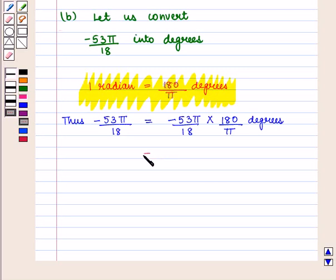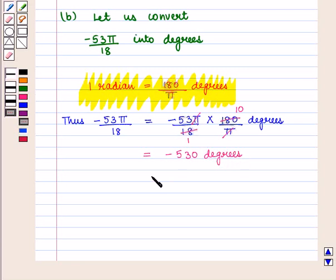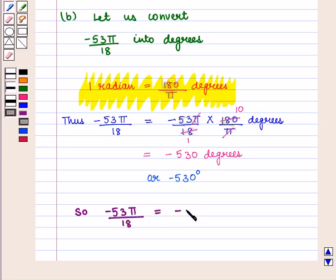This is equal to — since 18 into 10 is 180 — we get minus 530 degrees. So we say that minus 53π/18 is equal to minus 530 degrees, which is the required answer. This completes our session. Hope you enjoyed this session.